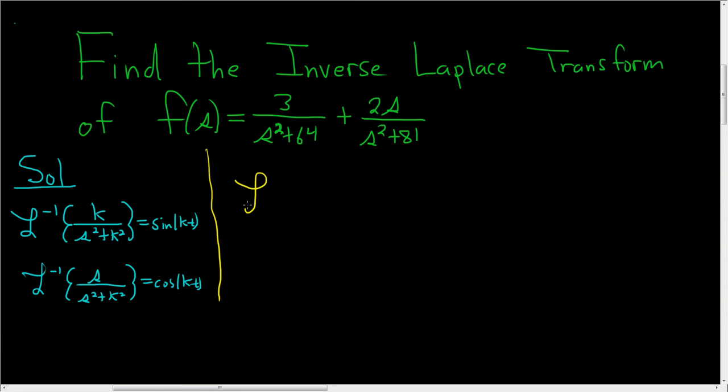Alright, let's go ahead and take the inverse Laplace of the whole thing. This is 3 over s squared plus 64 plus 2s over s squared plus 81. And now we can use the fact that the inverse Laplace transform is linear.